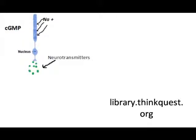Neurotransmitters are then released. Once the phosphodiesterase molecule is activated and gets rid of the cyclic GMP, making it just GMP, the cyclic GMP-gated channels will close and the neurotransmitters will stop being released.